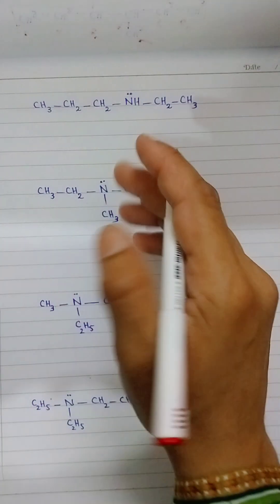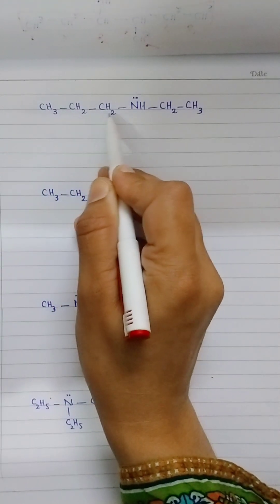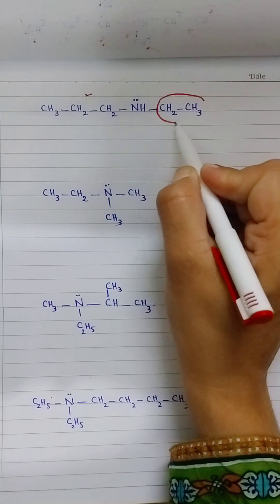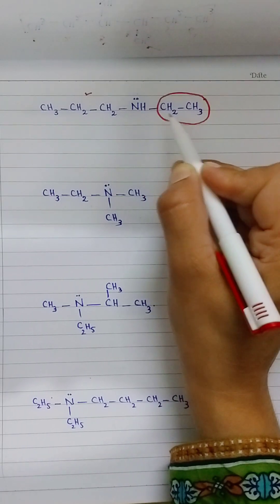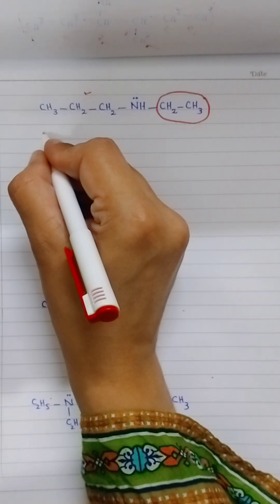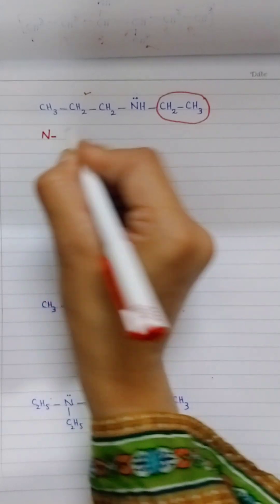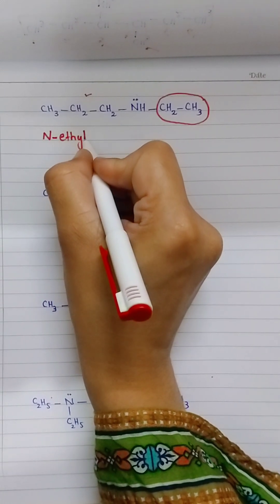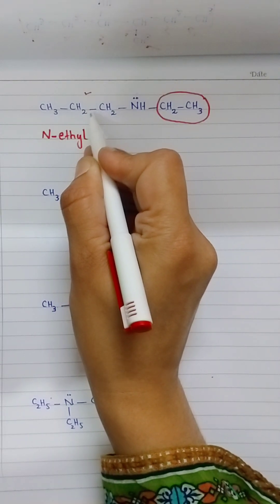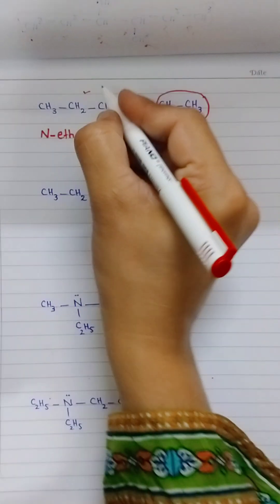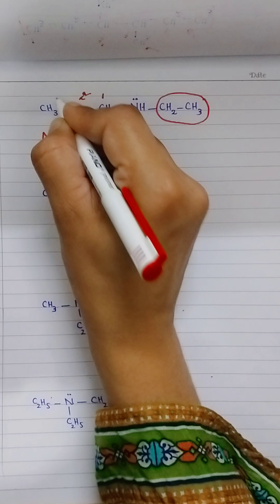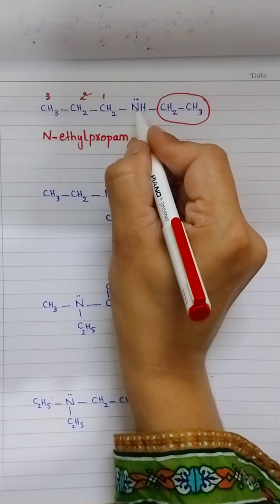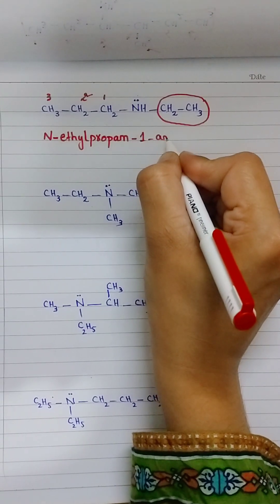Second example of secondary amines: the alkyl group with the maximum carbon atoms is selected for the end name, and the alkyl group with fewer carbons is written at the start as a nitrogen-substituted alkyl group, represented with 'N' for the nitrogen atom. Here, the two-carbon alkyl group attached to nitrogen is ethyl. The three-carbon chain is propane, 'e' replaced. The amino group is at carbon number 1. End name: amine. Name: N-ethylpropan-1-amine.